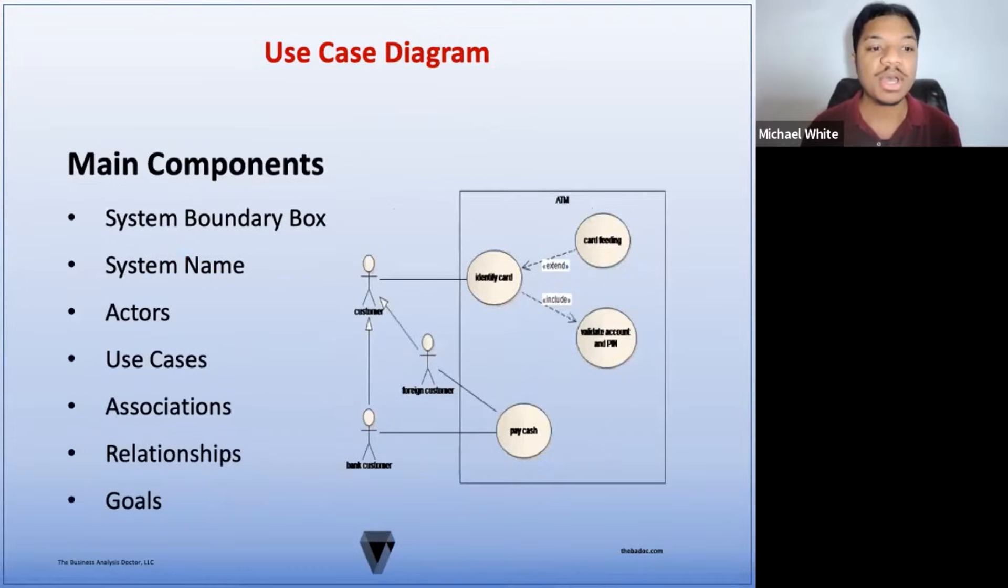The main components of a use case include the system boundary box, the system name, actors, use cases, associations, relationships, and goals.